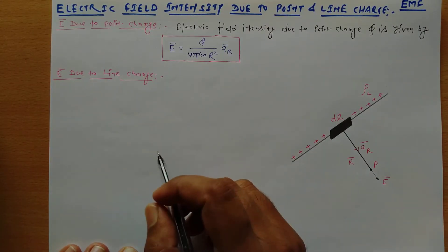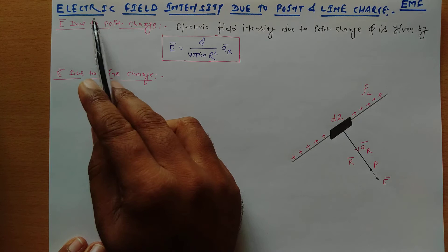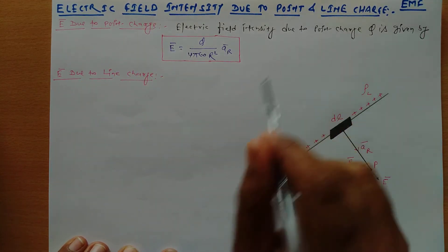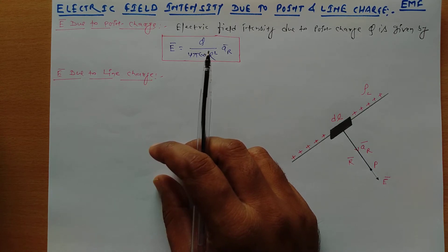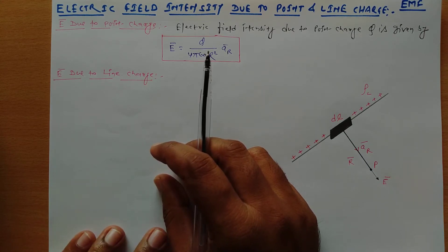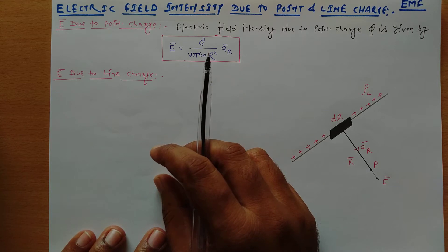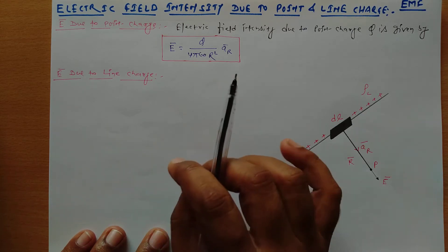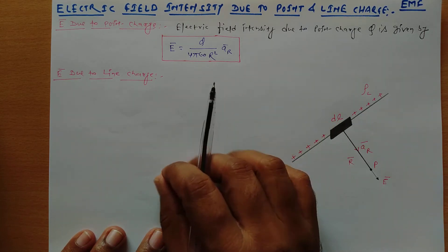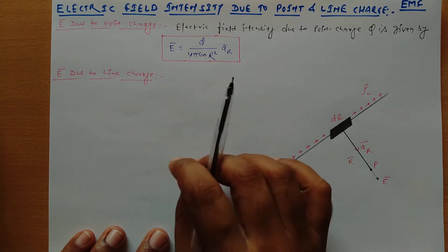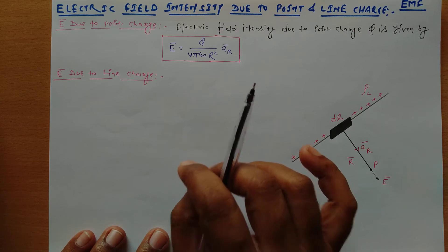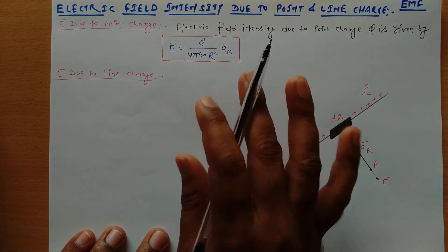Hello everyone. Our today's topic is electric field intensity due to point and line charge. In the previous video I told you about the different charge distributions, where we covered point charge distribution, line charge distribution, volume charge distribution, and surface charge distribution. From this video we are going to look at the different electric field intensity equations for different kinds of charge distributions.